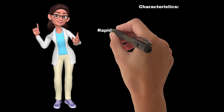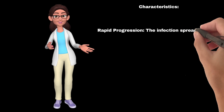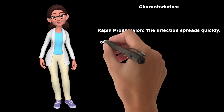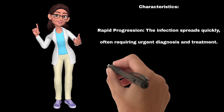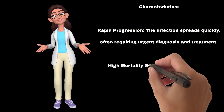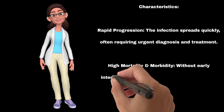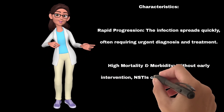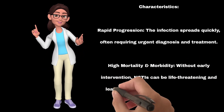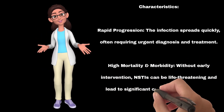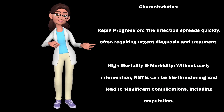Characteristics: Rapid progression — the infection spreads quickly, often requiring urgent diagnosis and treatment. High mortality and morbidity — without early intervention, NSTIs can be life-threatening and lead to significant complications, including amputation.